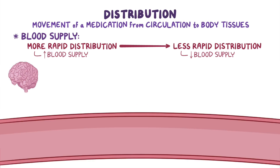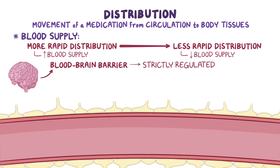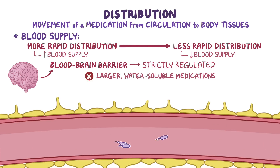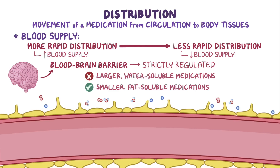For any medication to enter the brain itself, it has to go through the so-called blood-brain barrier, which is strictly regulated. Think of the blood-brain barrier as the brain's bouncer — a highly selective membrane that turns away large, water-soluble medications floating around in the blood, while letting in smaller, fat-soluble medications.